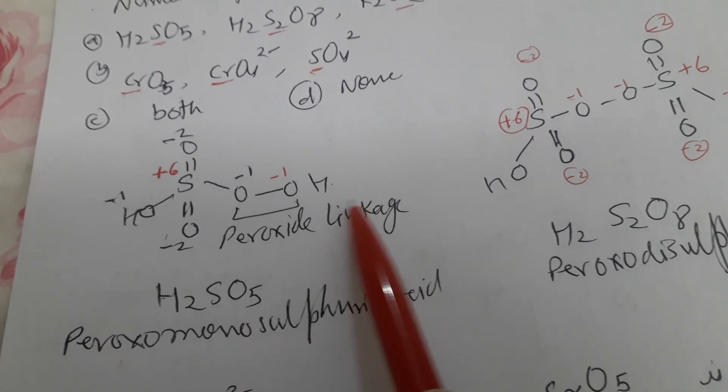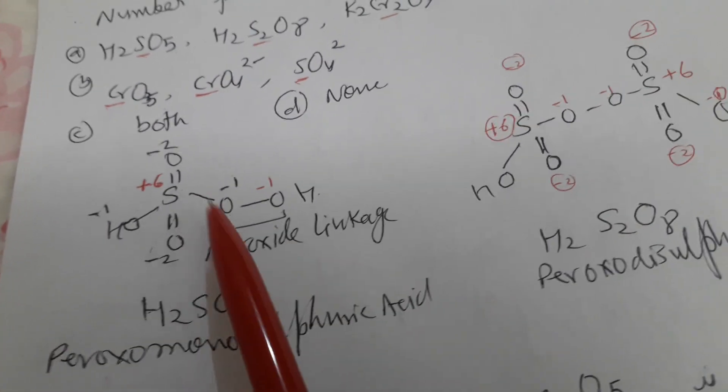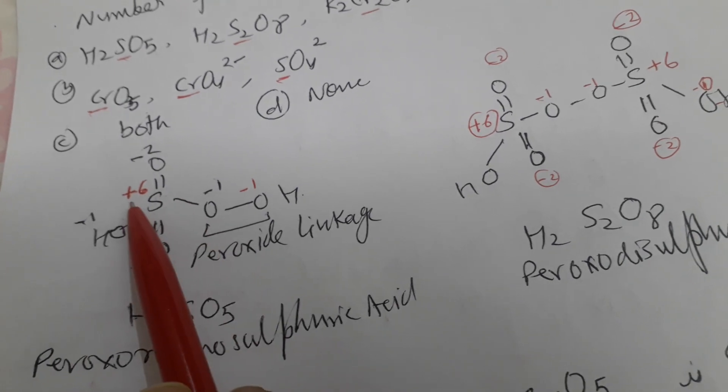Here this is having peroxido linkage. H₂SO₅, peroxomonosulfuric acid. Here sulfur is having plus 6 oxidation state.